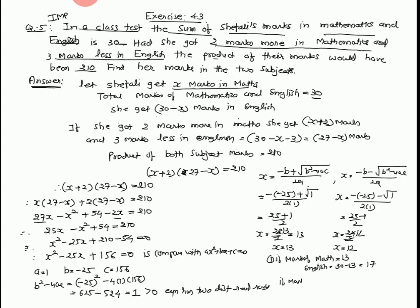If marks of maths are 12, English marks are 30 minus 12 equal to 18.